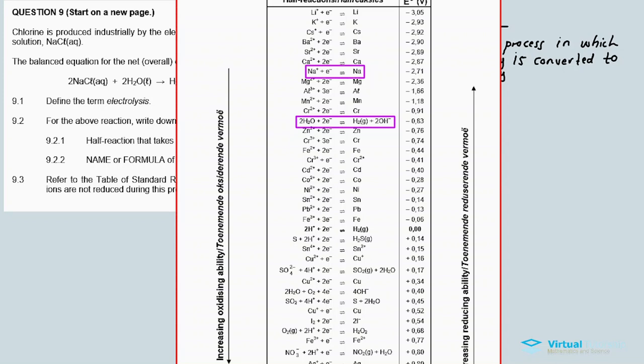So between the two, which one has the most oxidizing ability? If you look at the table, you'll see from top to bottom, there's an increasing oxidizing ability. From bottom to top, there's an increasing reducing ability. So therefore, the oxidizing strength increases.